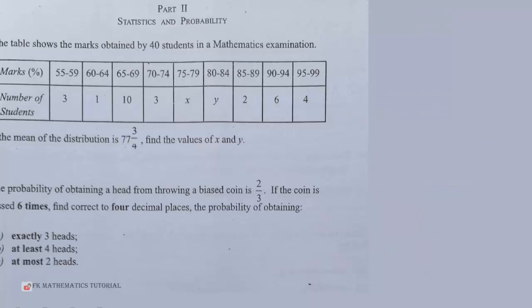Now let's look at question number 13. The probability of obtaining a head from throwing a biased coin is 2/3. If the coin is tossed six times, find correct to four decimal places the probability of obtaining exactly 3 heads, at least 4 heads, and at most 2 heads. This is a binomial probability with n equals 6 and p equals 2/3.